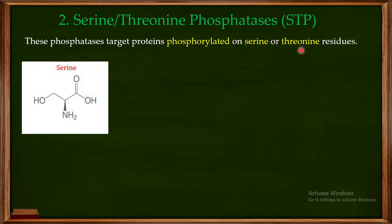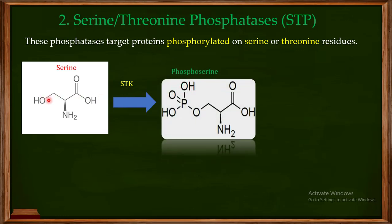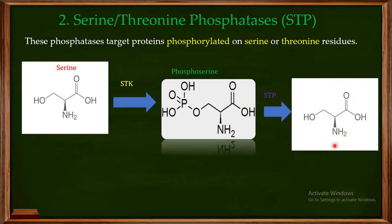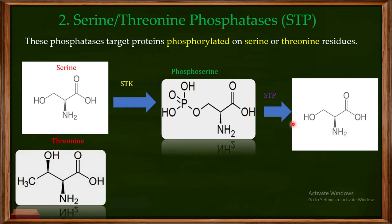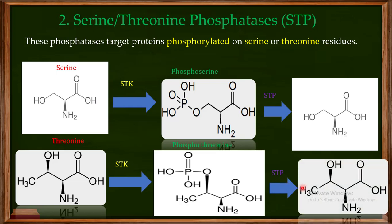For example, if a serine in the target protein is phosphorylated by a serine threonine kinase (STK), using ATP as the phosphate source, you get phosphoserine. The serine threonine phosphatase (STP) then comes and removes the phosphate group from that serine, converting it back to its original state. Similarly, if threonine has been phosphorylated by the serine threonine kinase, the serine threonine phosphatase removes the phosphate group from the threonine in the target protein.